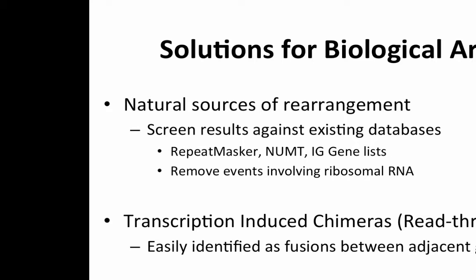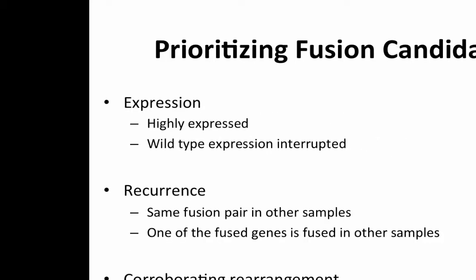For natural sources of rearrangement, database searches are a good way to filter them out. We also have transcription-induced chimeras, or read-throughs, which happen when a gene is not rearranged but during transcription a stop site is skipped, reading through into the next gene so those two genes are co-transcribed — it looks like a gene fusion between adjacent genes. These are very common even in benign samples. A lot of these fusion discovery programs have an option to filter them or flag them because they dominate the bulk of predictions.